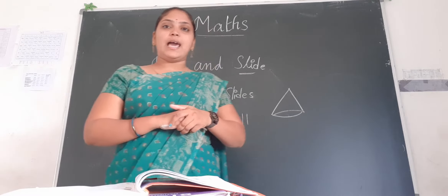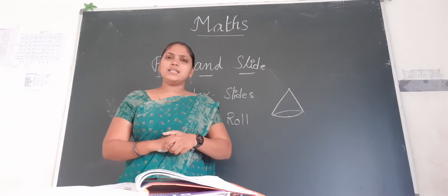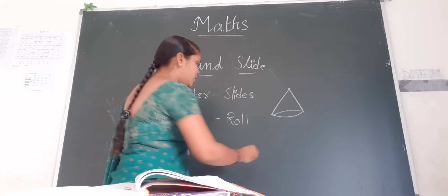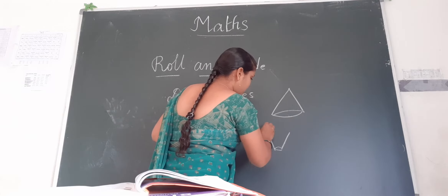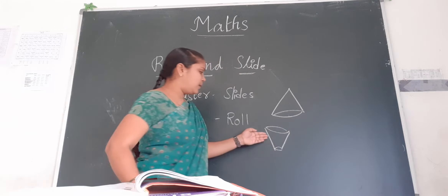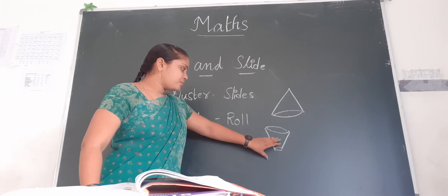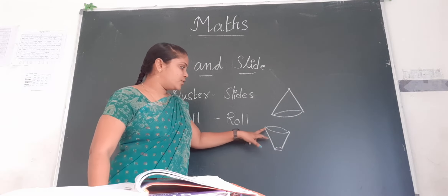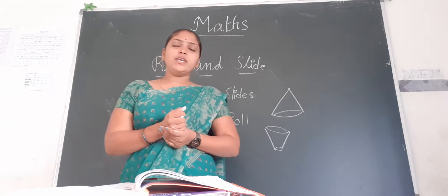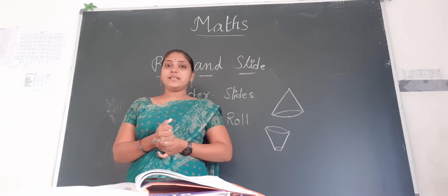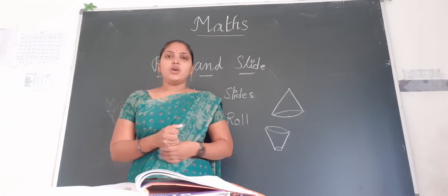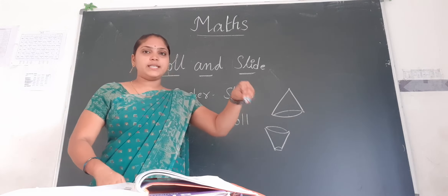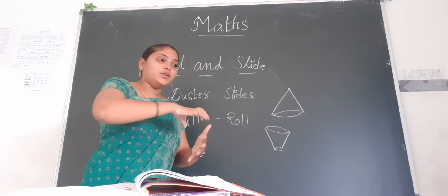Next, the last one — glass. Does a glass roll as well children? Glass has both a flat surface and a curved surface. If you place it upright on the floor it slides, but if you lay it on its side it rolls. So glass both rolls and slides.